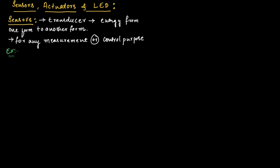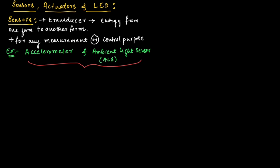Examples of sensors are the accelerometer and the ambient light sensor (ALS). Both sensors are used in smart wearable devices — the accelerometer counts the number of steps, and the ambient light sensor measures light intensity.